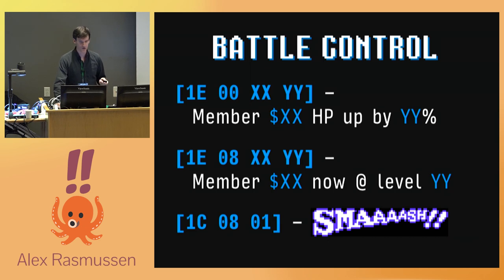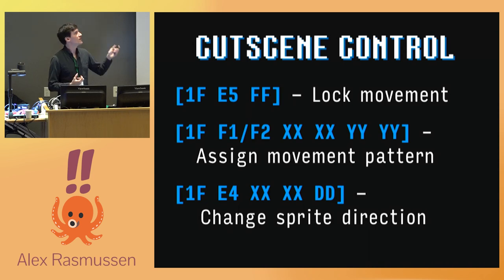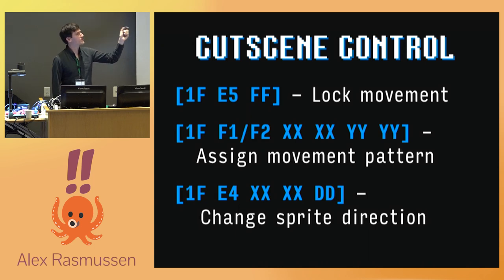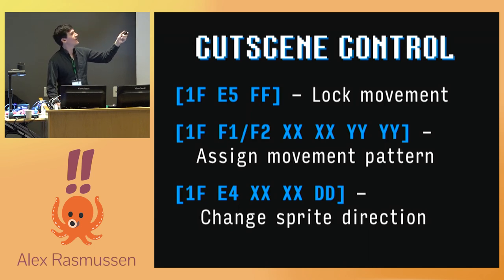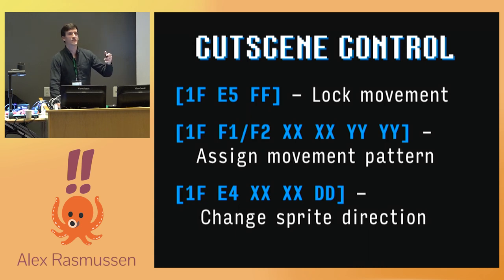Another thing this system controls is cut scenes. If you want non-player characters to move around, the first thing you do is lock player movement — there's a specific operation for that. You can also take a given sprite and assign it a movement pattern from a table, like going a certain number of pixels to the right and then turning and going down. If you want a sprite to stay in one place and change direction — for example, look left then look right — you can give them an instruction to change direction. Keep in mind this is all done with the same system that handles text and everything else.